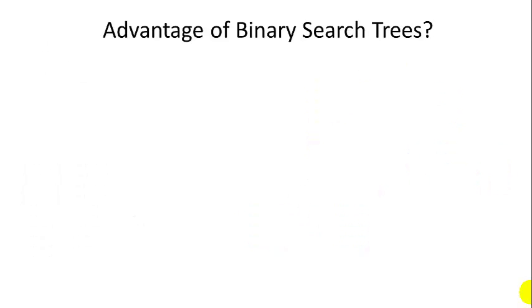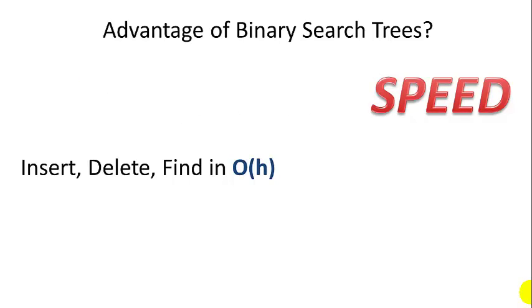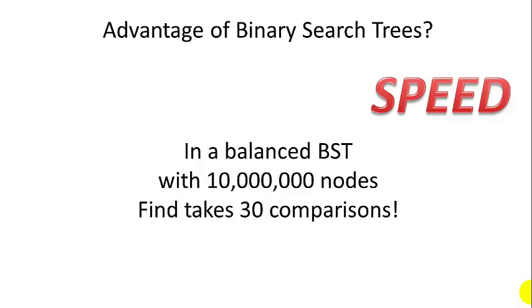The advantage of binary search trees? Speed. We can insert, delete, and find in big O of H speed, which is the big O of the height of the tree. That means that in a balanced binary search tree with 10 million nodes, find, insert, and delete operations take only on the order of 30 comparisons, which is incredibly fast. That wraps up our introduction to binary search trees.